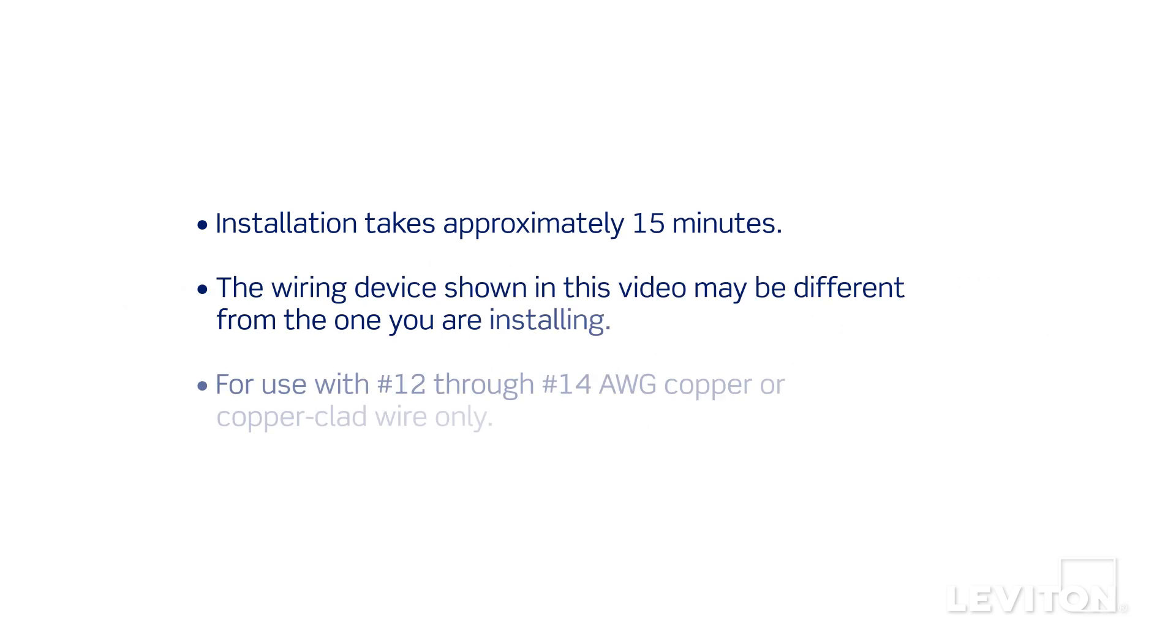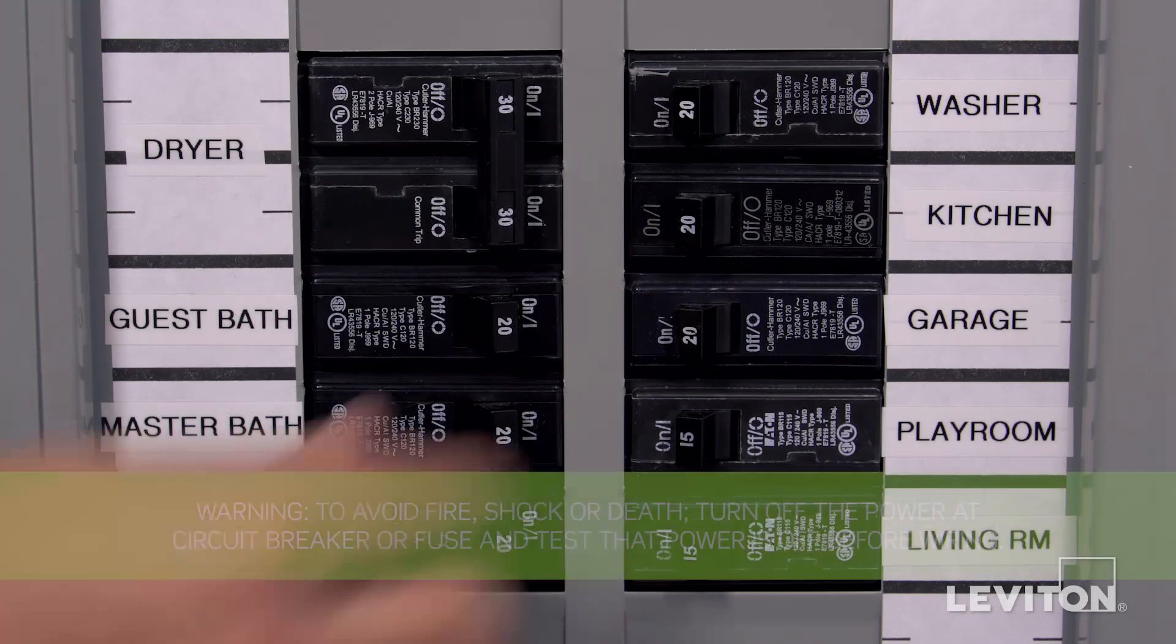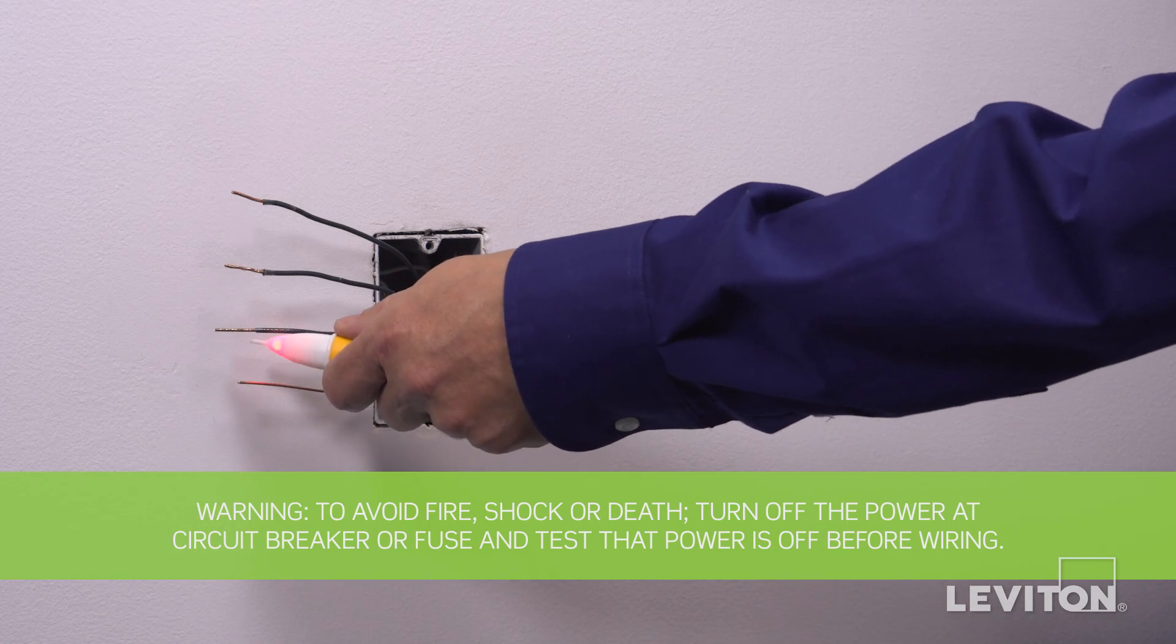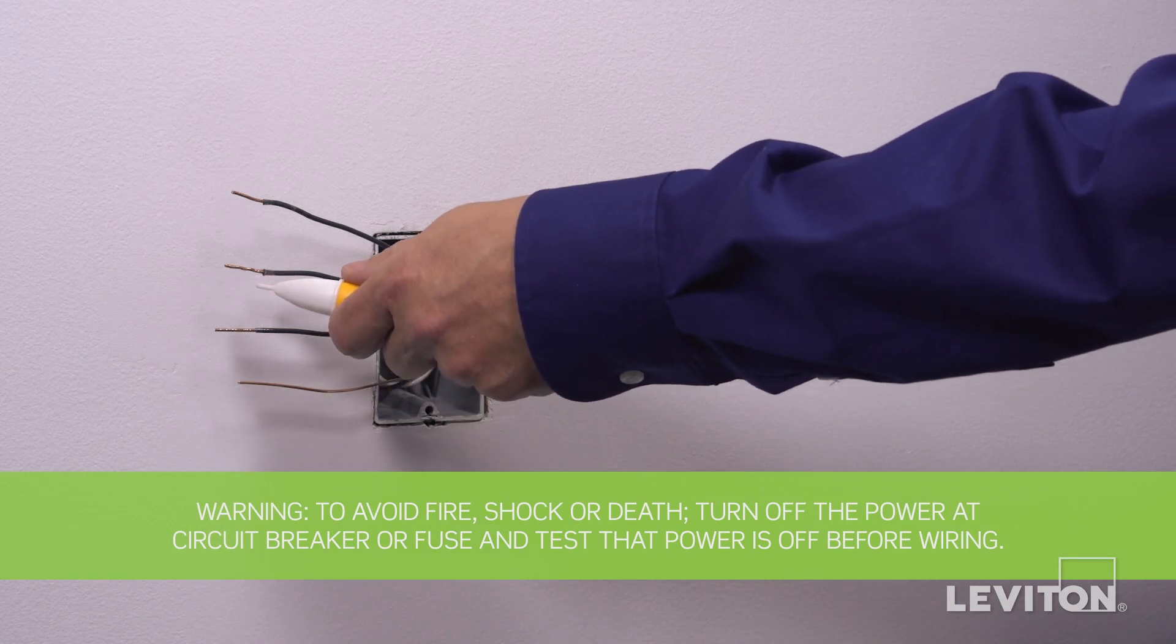Installation takes approximately 15 minutes. The process shown follows general guidelines. Local codes take precedence. Be sure to turn the power off at the circuit breaker and use a voltage tester to ensure that the power is completely off.